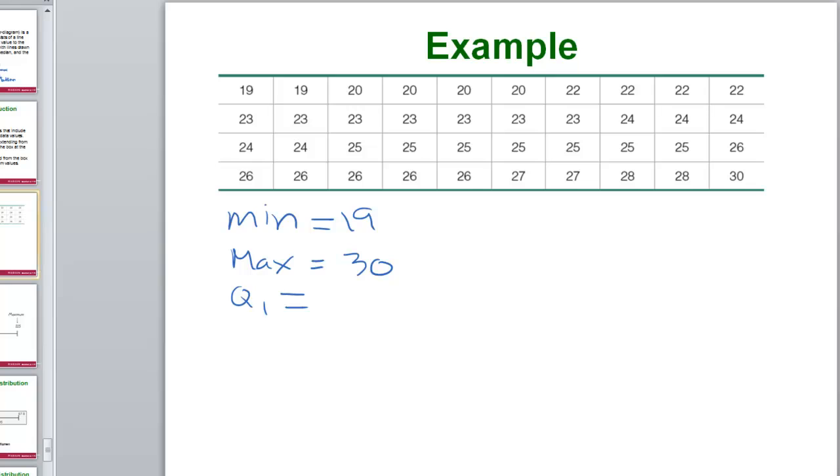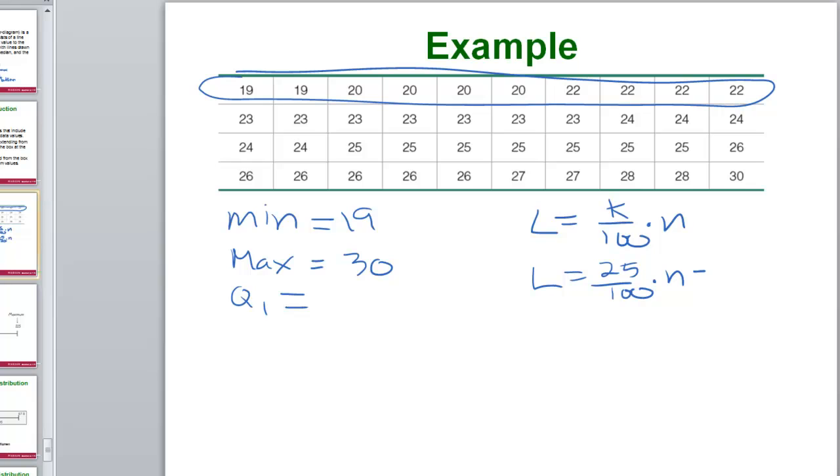Q1, our first quartile, according to our formula, remember the formula that we have? L equals K over 100 times N. So if we are looking for Q1, we are looking for the 25th percentile. L is going to be 25 over 100 times N, which in this case is 40. So we are looking for 25% of 40 which is 10. Now according to our decision tree, we have a whole number, and when we have a whole number, the Kth percentile we are looking for is halfway in between that one and the next one. So we go halfway in between the 10th and the 11th and we get 22.5.